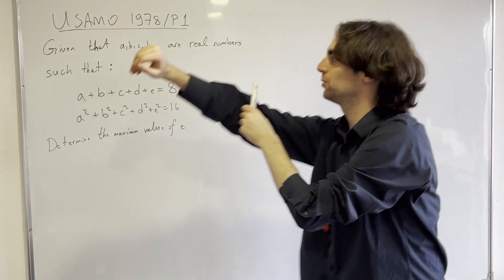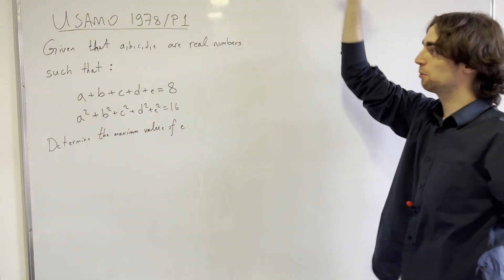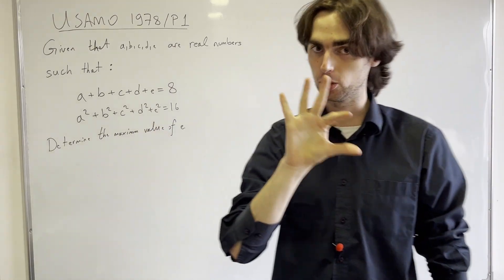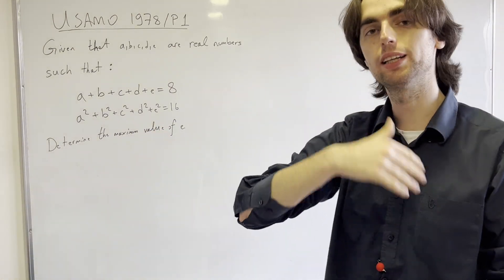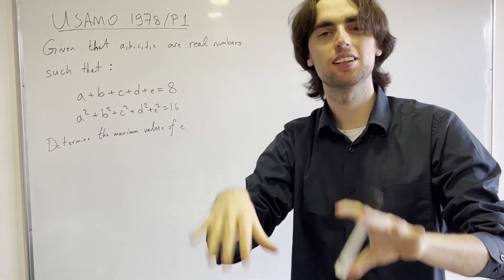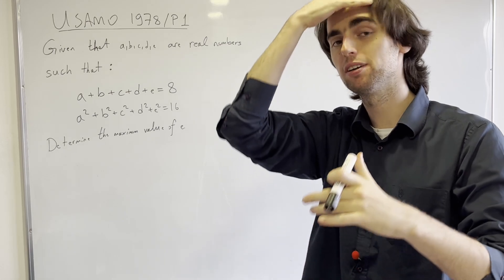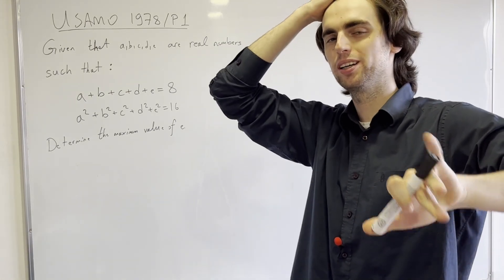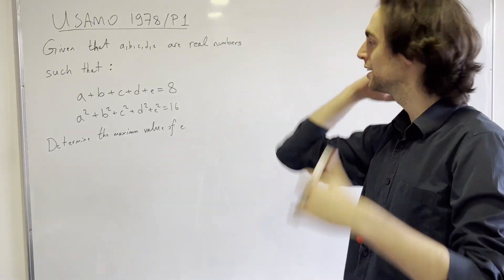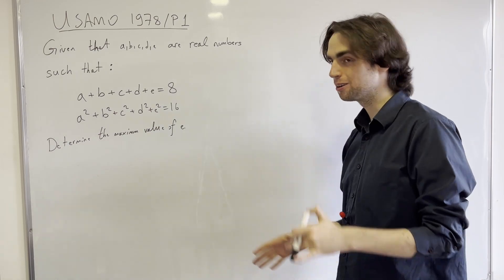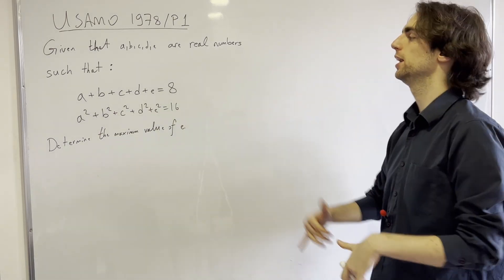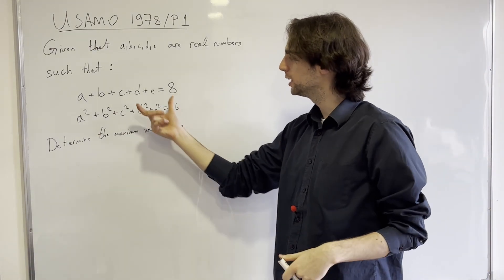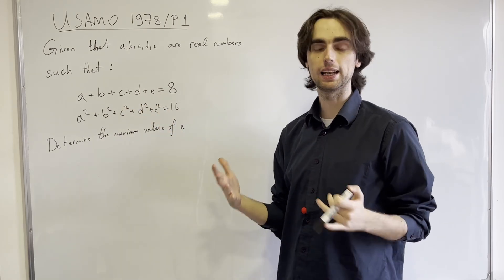Hello fellow problem solvers. Today we're going to be doing a problem from the USAMO from 1978, Problem Number 1 — a cool inequality. It's not standard; try it out for a minimum of 20 minutes, ideally 42 minutes to an hour, not more than 90 minutes. If you'd like to go along with us, let me ask you: how are we even going to use these conditions together to get e?